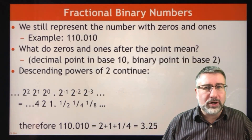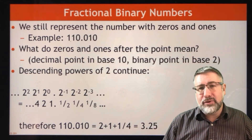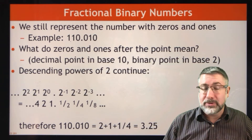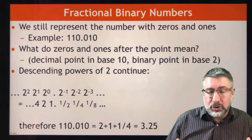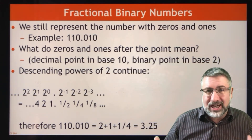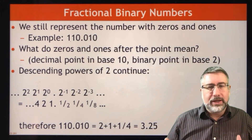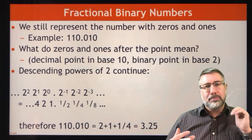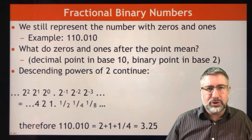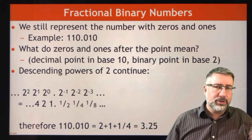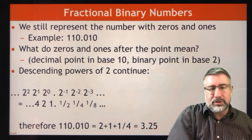Here's how they work. Basically, if we have numbers that represent integers then we can use the same kind of idea to represent fractions. Integers are positive powers of 2 — 2 to the 1, 2 to the 2, 2 to the 3, 2 to the 4 — giving us 1, 2, 4, 8, 16, 32.